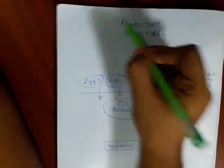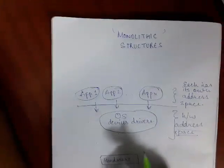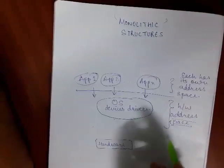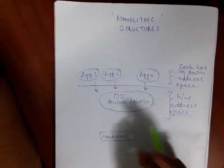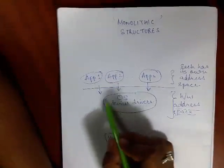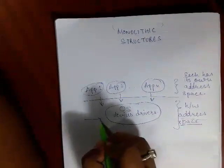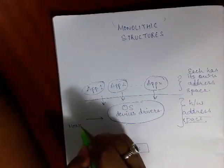Now you all must be wondering why this is monolithic—why the word monolithic? Note that all the services like the file system, memory management, CPU scheduling, network, etc., are all contained in this one big block which is called the OS. That is the only reason why this structure is named as monolithic.